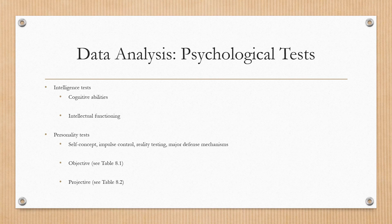Psychological tests are another source of data. There are two types, intelligence tests and personality tests. Intelligence tests evaluate the patient's cognitive abilities and their intellectual functioning. Personality tests reflect areas like self-concept, impulse control, reality testing, and defense mechanisms.